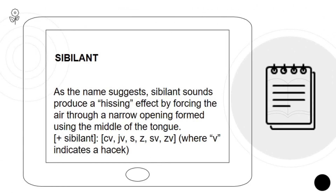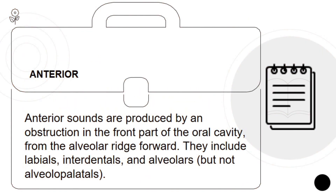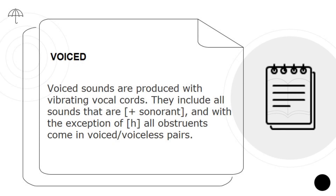Sibilant: sibilant sounds produce a hissing effect by forcing the air through the narrow opening formed using the middle of the tongue. Anterior: anterior sounds are produced by an obstruction in the front part of the oral cavity from the alveolar ridge forward — they include labials, interdentals, and alveolars, but not alveopalatals. Voiced: voiced sounds are produced with vibrating vocal cords; they include all sounds that are voiced, with the exception of h. All obstruents come in voiced and voiceless pairs.